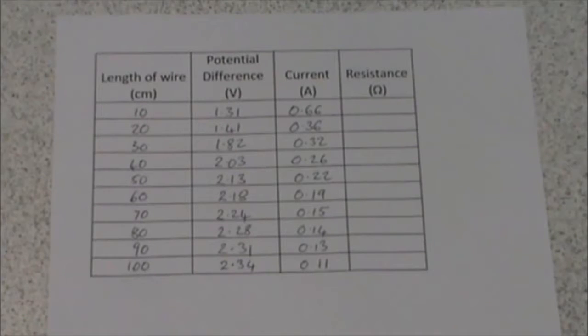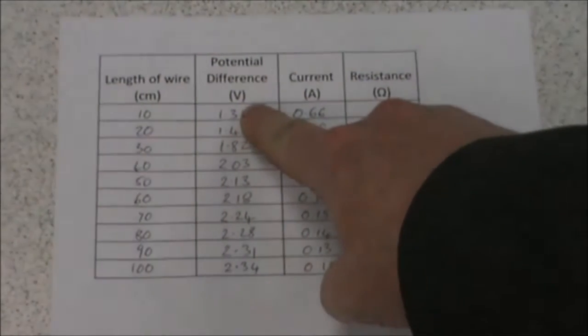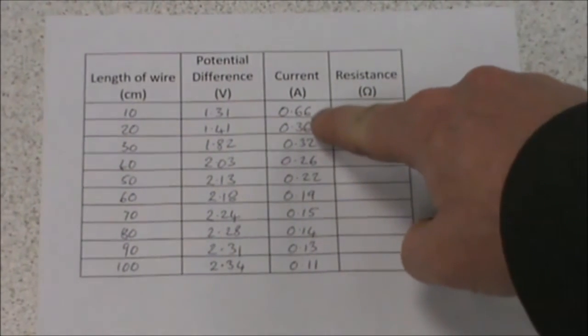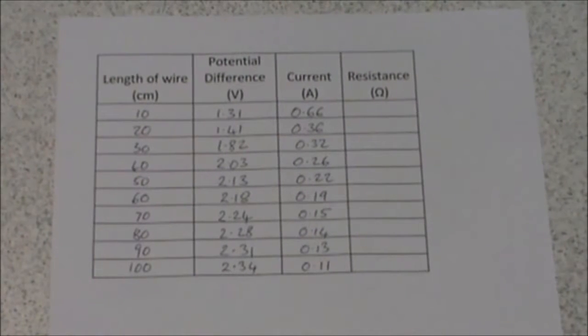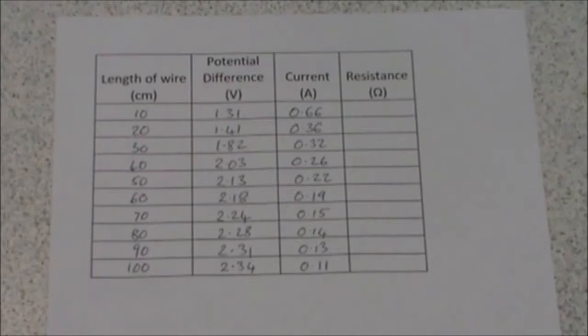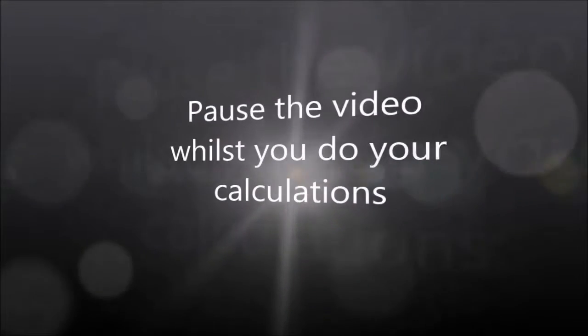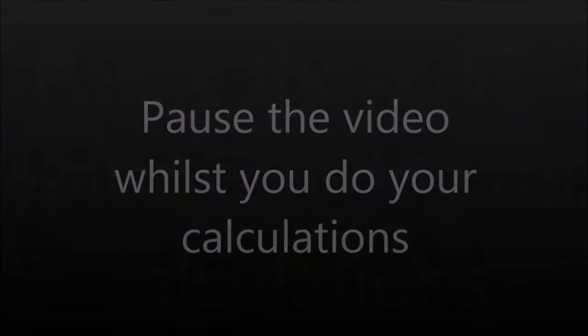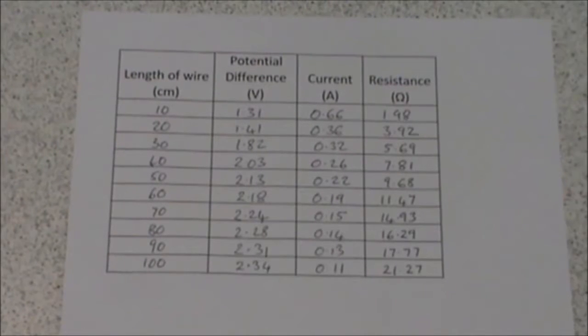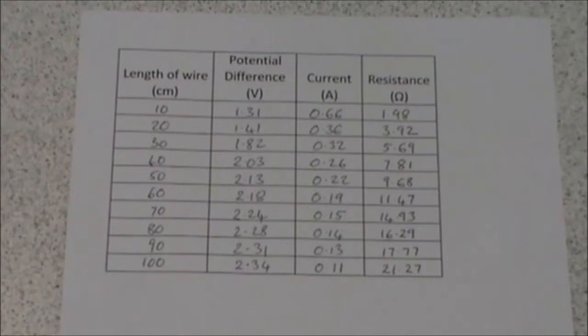Using Ohm's law, we now need to calculate the resistance. To do this, we divide the potential difference in volts divided by the current in amps. You can now complete this results table using these results. You can now check your calculations against my calculations.